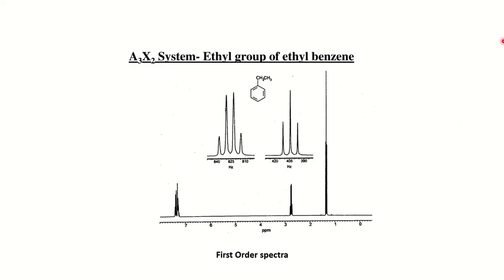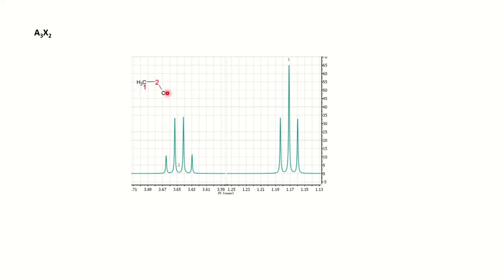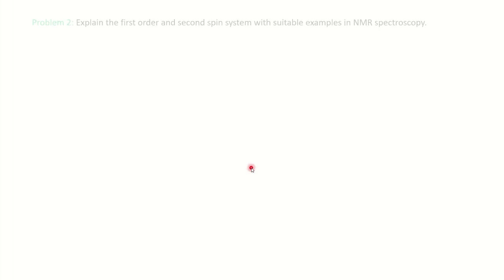For the A3X2 system, consider a molecule with CH3 (A3, three protons) and CH2 (X2, two protons) where X2 is attached to a phenyl group, giving a higher chemical shift. You get a quartet-triplet pattern: X2 gives a quartet (split by three neighboring A3 protons) and A3 gives a triplet (split by two neighboring X2 protons). Another example is ethanol, where CH2 appears as a quartet and CH3 as a triplet — a first order spectrum.